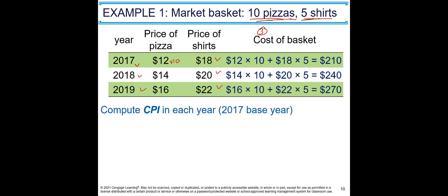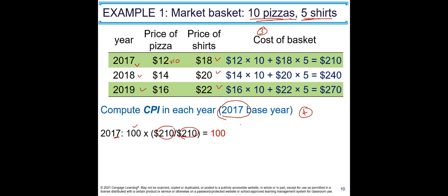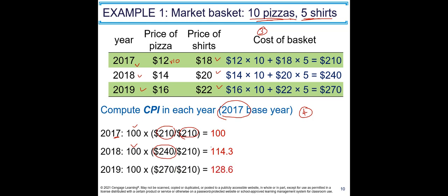Step four — choose the base year. We designate 2017 as the base year. Now we calculate CPI for each year. For the base year 2017: CPI = 100, because the basket cost and base year cost are the same. For 2018: CPI = 100 × (240 / 210) = 114.3. For 2019: CPI = 100 × (270 / 210) = 128.6.